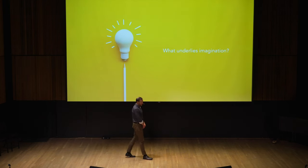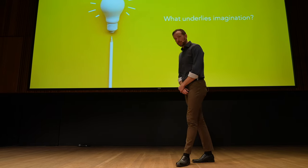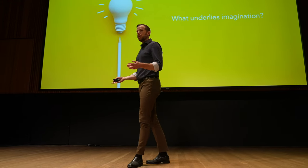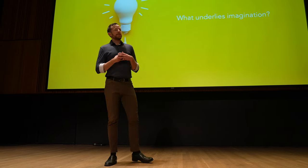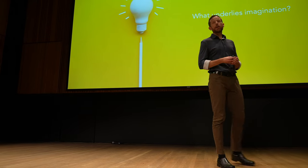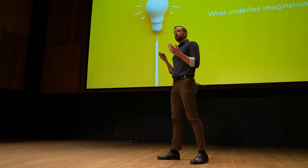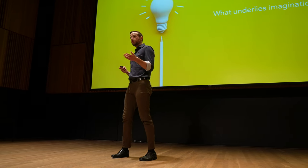Thank you very much, Alan. I'm here today to talk to you about one of the questions that has consistently fascinated me, and a question which helped draw me into the fields of neuroscience and artificial intelligence. That question is: what underlies our imagination? Our imagination is critical to our intelligence — critical to our ability to plan, to create, and innovate. Understanding how our brain works and knowing how to build an artificial brain will necessarily require an understanding of imagination. My laboratory has been studying some of the components that help support imagination, and that's what I'm going to tell you a little bit about today.